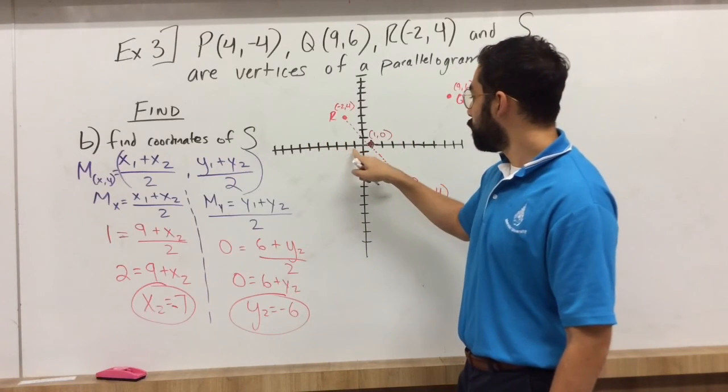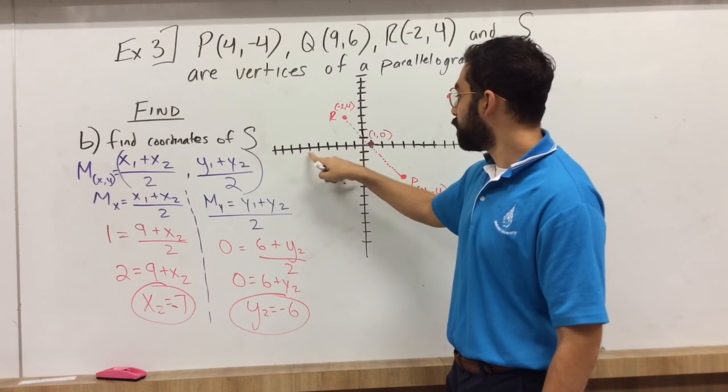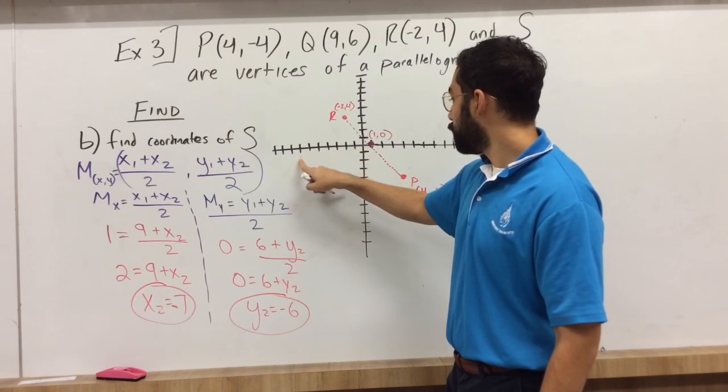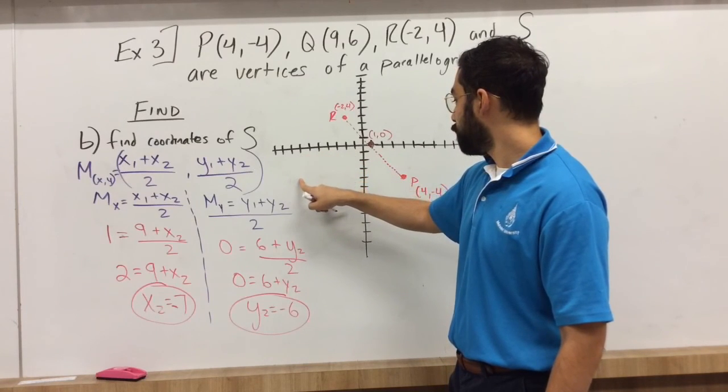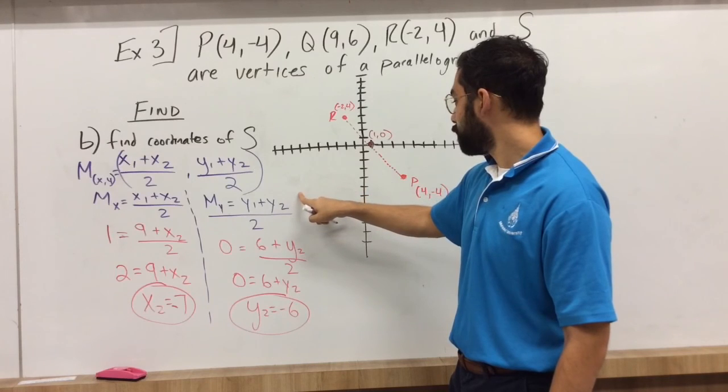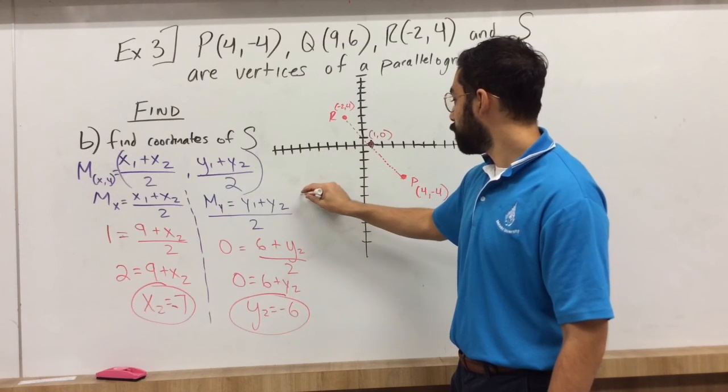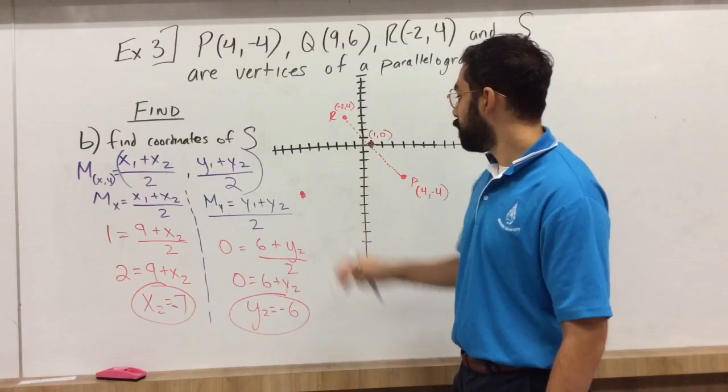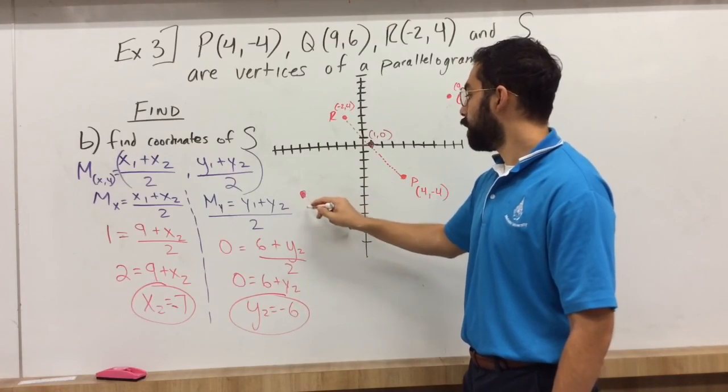Okay, so negative 7, negative 6. Okay, so this is our S value.